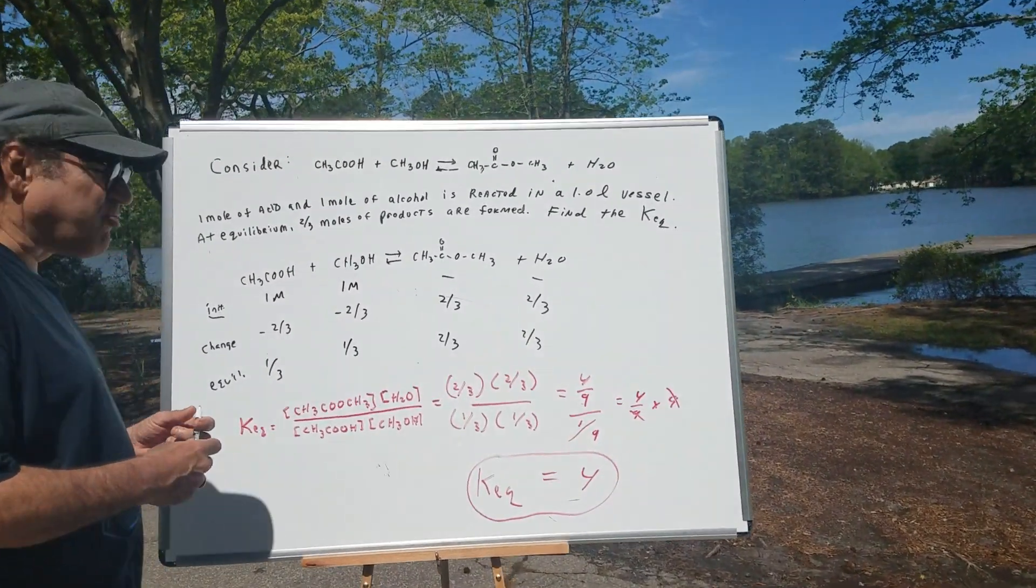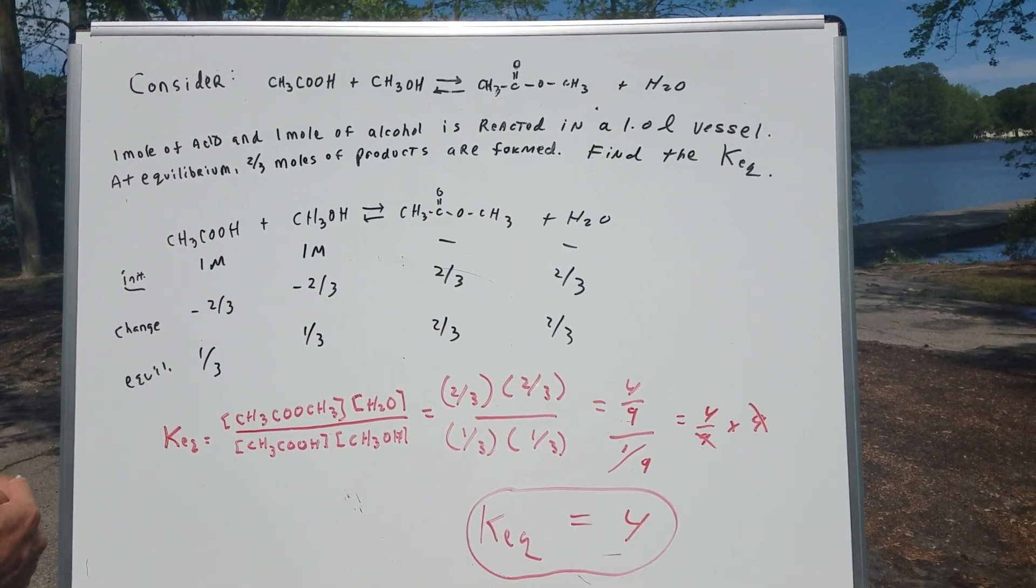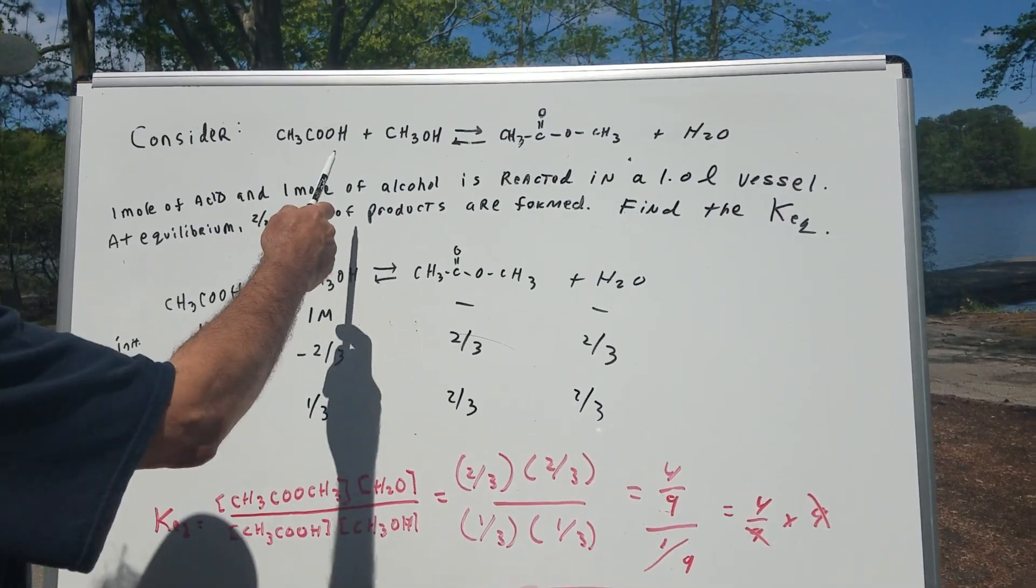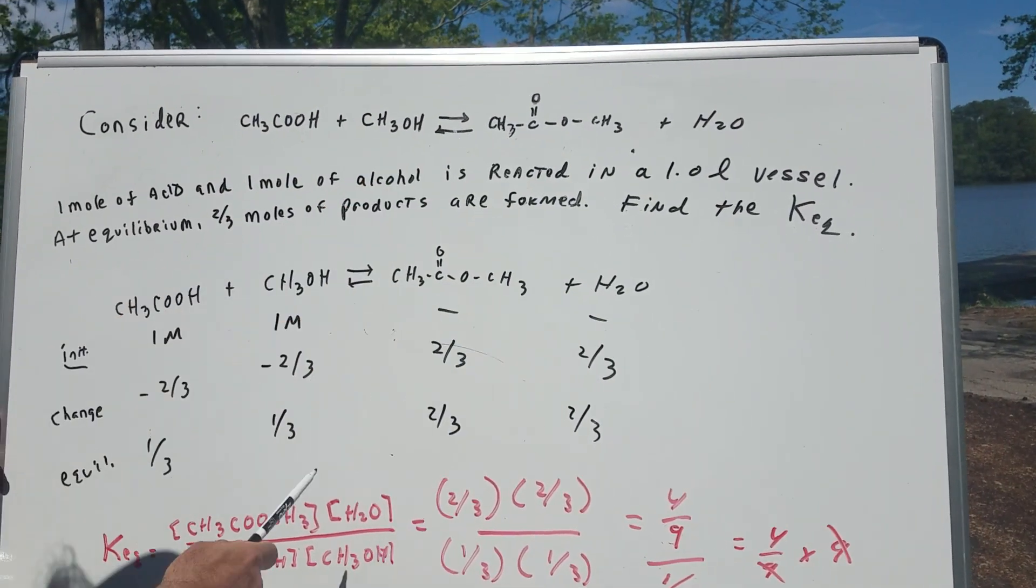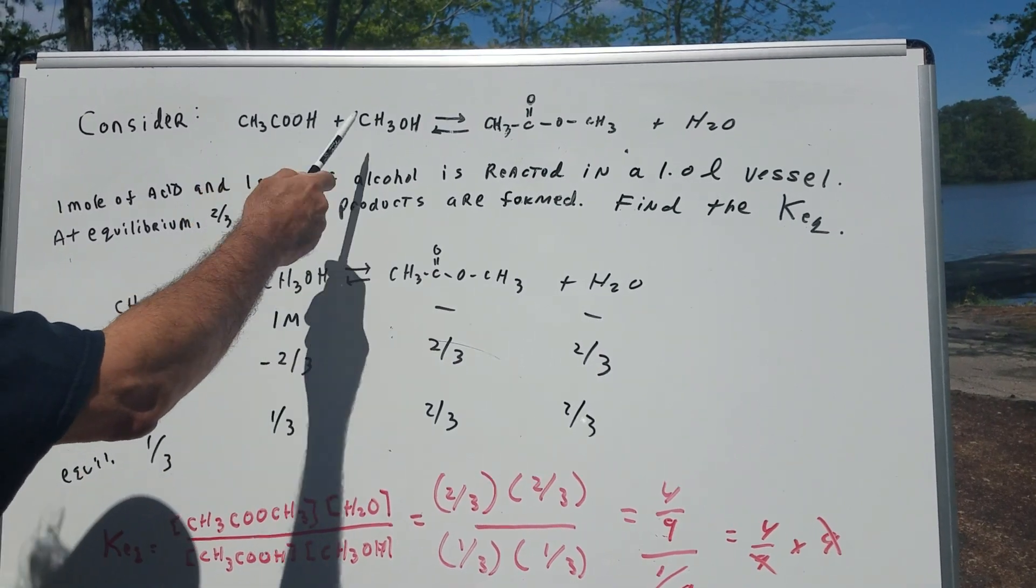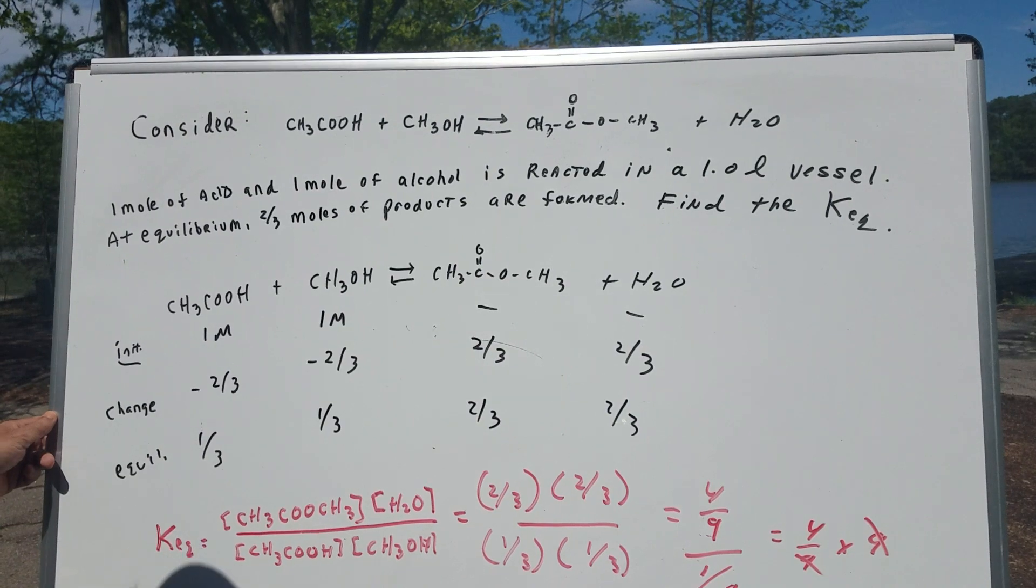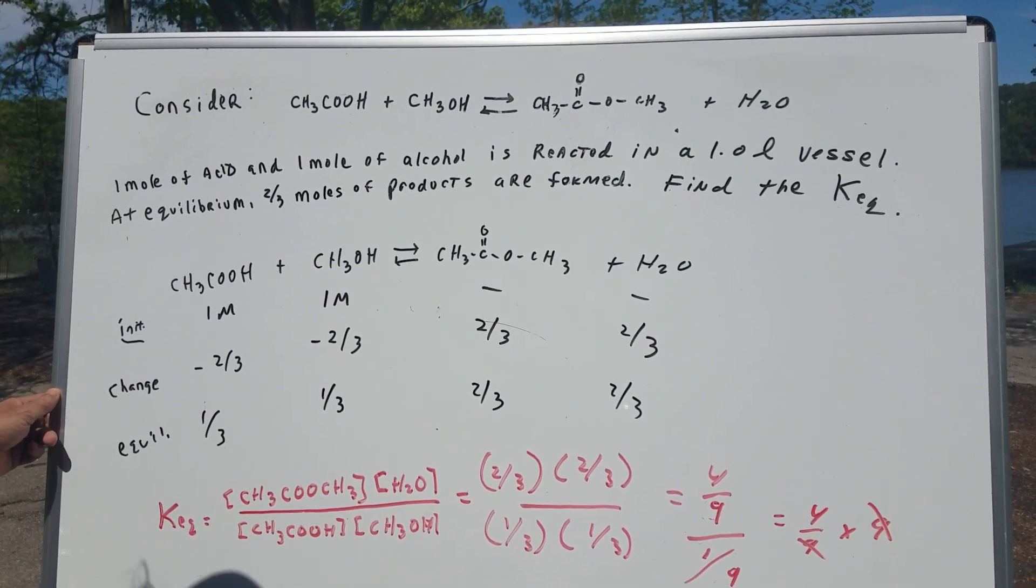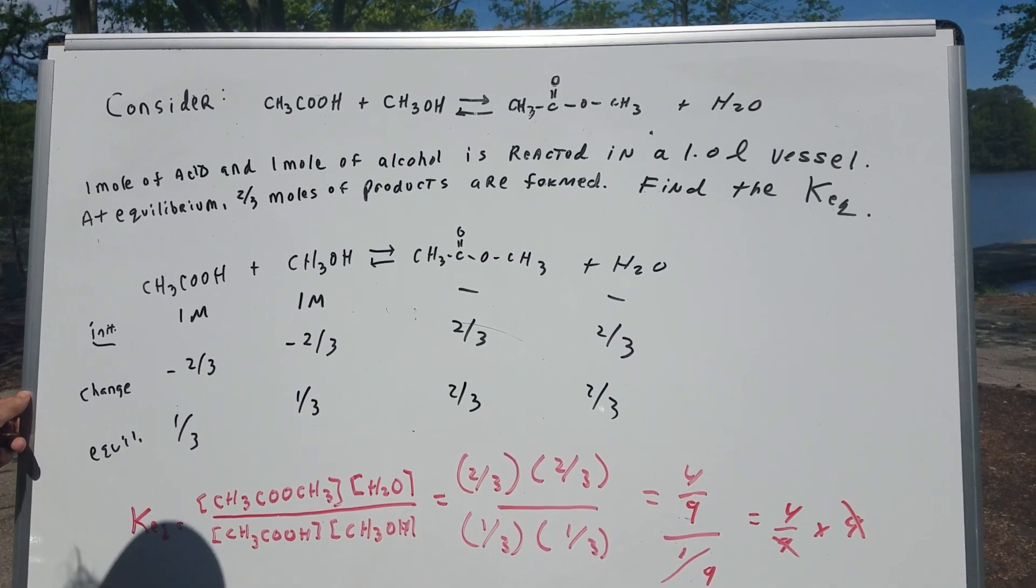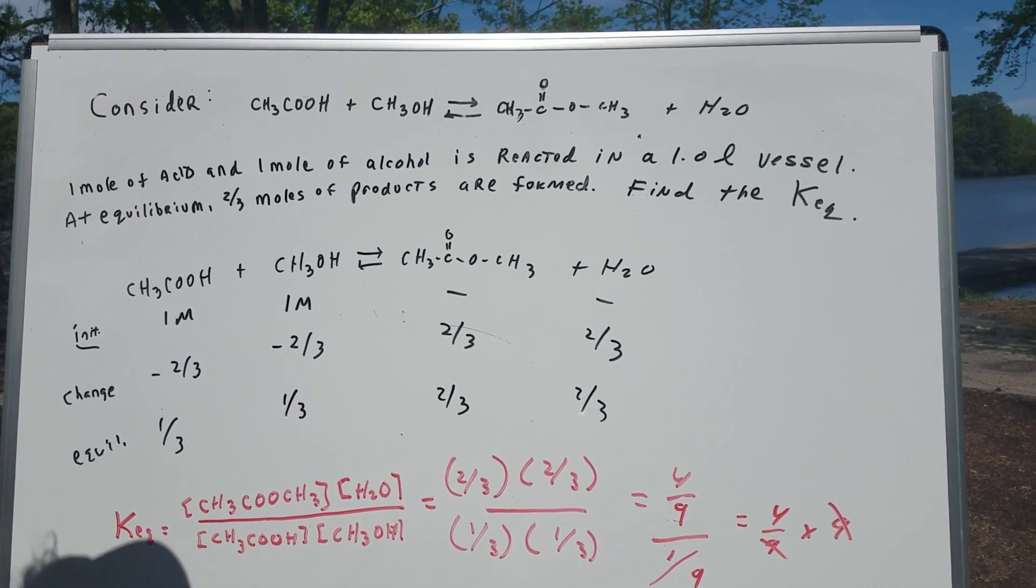We have a very tricky problem at hand today. Now I think I can hammer about 99.9% of you guys. It starts off, we have acetic acid and methanol, and we make methyl acetate in water. So it's just a normal acid alcohol gives ester plus water reaction. One mole of the acid and one mole of the alcohol is reacted in a one liter flask. At equilibrium, two-thirds of the products are formed. Find the KEQ.